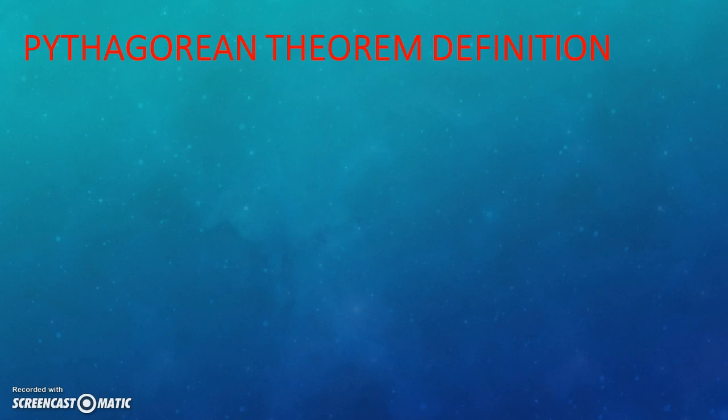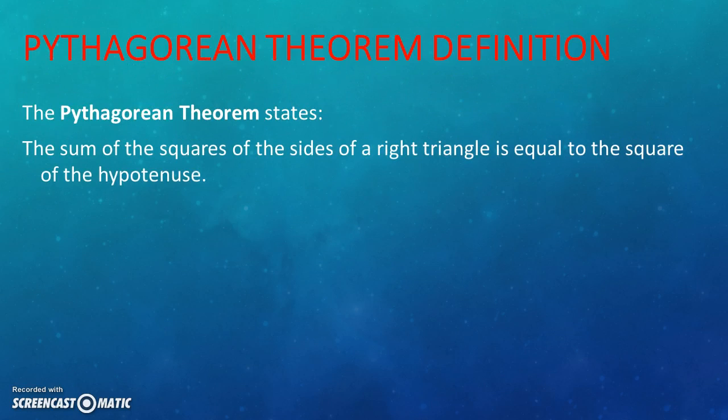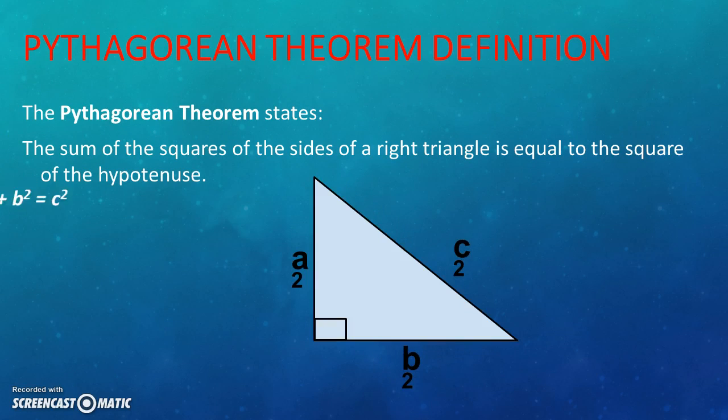Now, coming to the main topic, Pythagorean theorem states that sum of square of base and perpendicular of a right triangle is equal to square of hypotenuse. The figure in this screen clearly represents Pythagorean theorem.